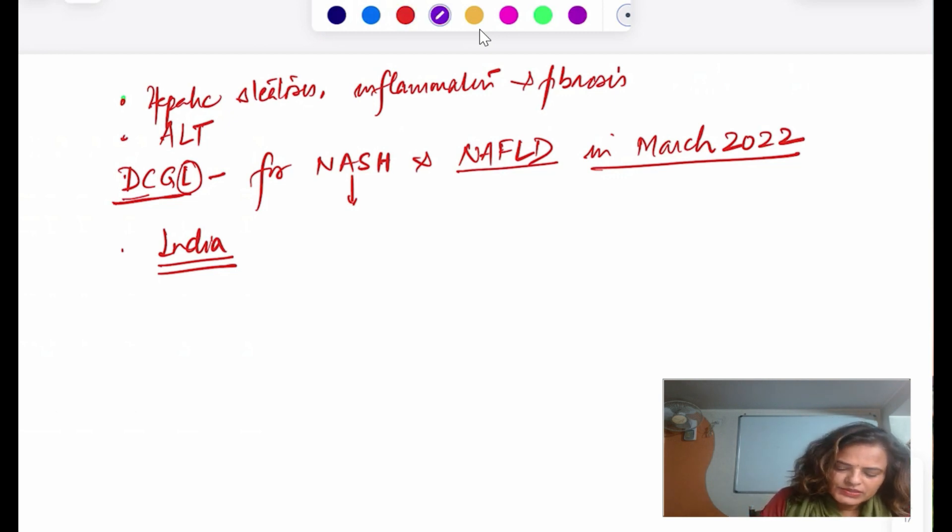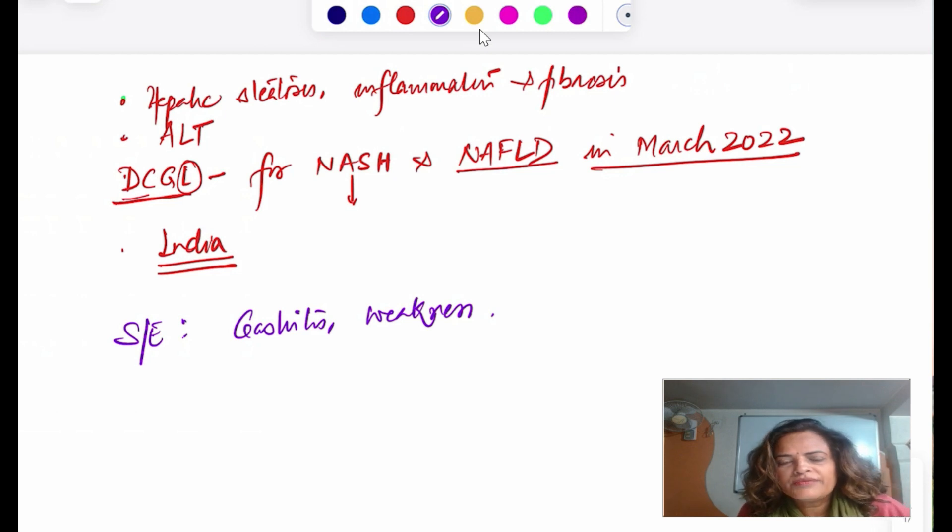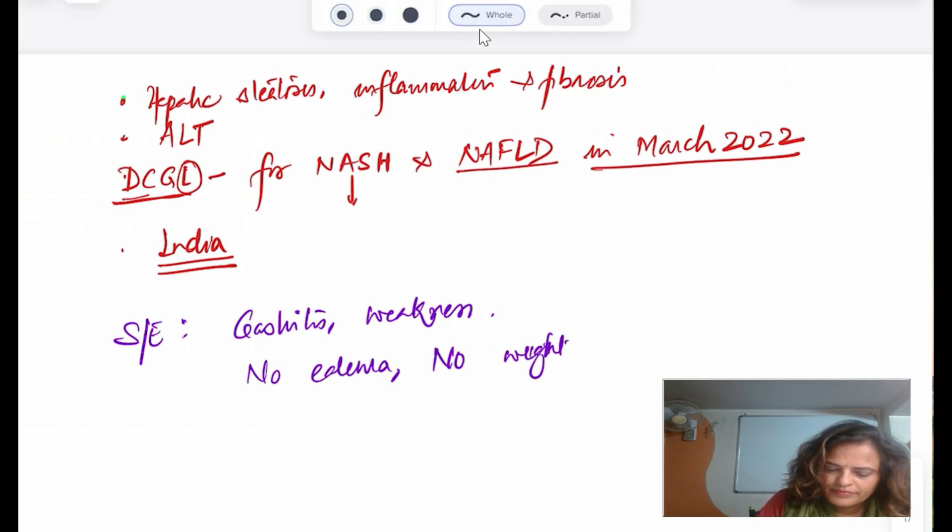What are the important side effects with this drug? So far, side effects are gastritis and weakness. It improves transaminase level. Though with pyoglitazone or thiazolidinedione derivatives it causes fluid retention, this drug does not cause fluid retention. No edema and no weight gain is seen with this drug.